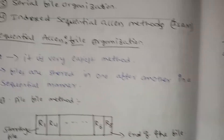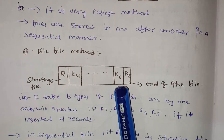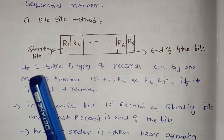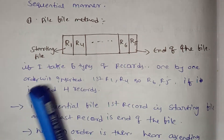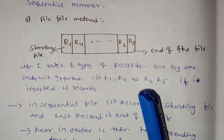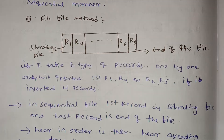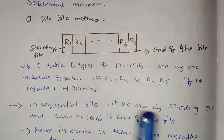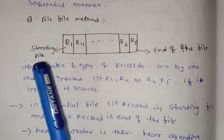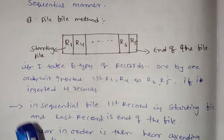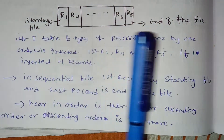First, the pile file method. The file has a starting point and an end of file. For example, if I take records R1, R4, R6, R5 — I will insert the records. In sequential file, the first record is the start of file and the last record is the end of file. Here, R1 is the start and R5 is the end of file.